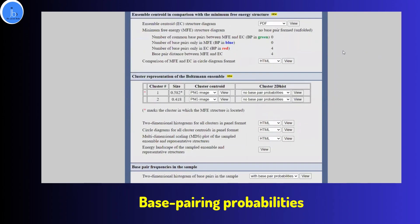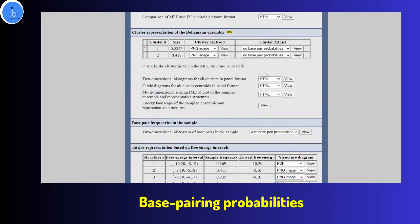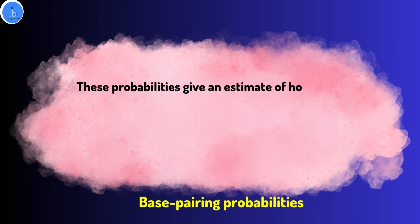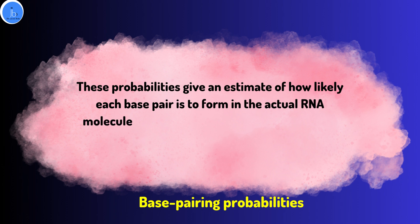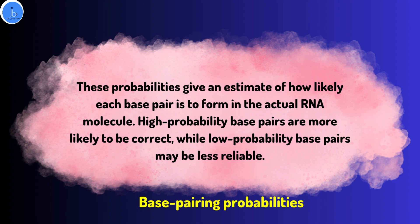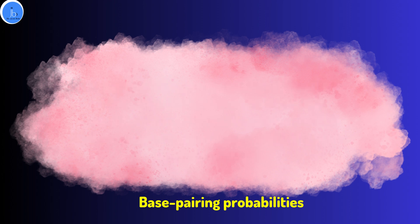In S4 you are also going to get base pairing probability. S4 provides probabilities for each base pair in the predicted structure. These probabilities give an estimate of how likely each base pair is to form in the actual RNA molecule. High probability base pairs are more likely to be correct, while low probability base pairs may be less reliable.